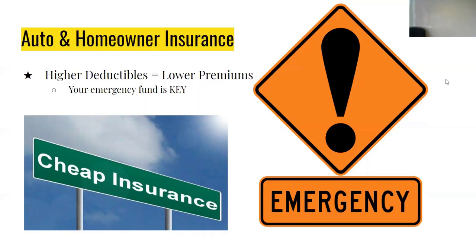The deductible is what the person who buys the insurance has to pay before the insurance company even starts paying. For example, if I have auto or homeowners insurance and my deductible is five hundred dollars, when I get in a wreck I have to pay the first five hundred dollars to fix my car, then the insurance company will help me. So if we have a high deductible, you're going to have to pay more — but you have low premiums, meaning your payment to even have insurance is low, which is good.